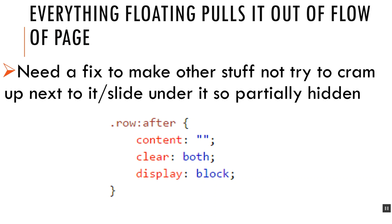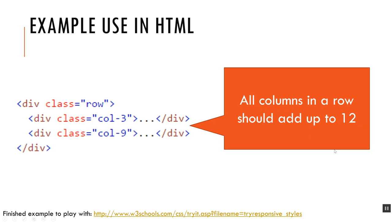Since everything is floated, we need a way to knock content down on the page. We create a class called 'row', and using the ::after pseudo-element on it, we set content to an empty string, clear to both, and display to block — that knocks down the next row when needed. In the HTML, instead of using empty divs like 960GS, we surround each row with a div of class 'row', and inside specify column sections like col-3 and col-9, which must add up to 12 in a 12-column design.